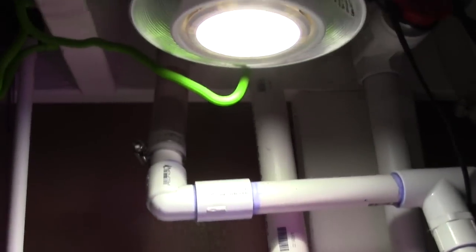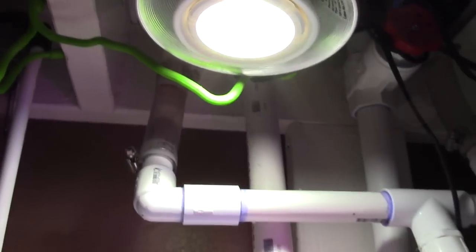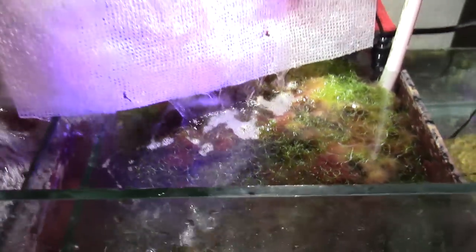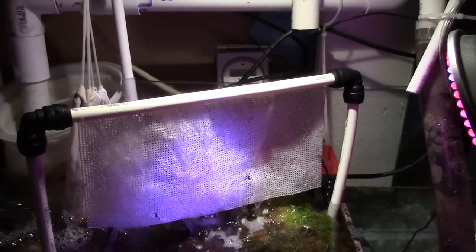I'm powering this with the PAR38 that I showed you and also the LED that I got from Home Depot mounted to the top. I'm actually gonna go ahead and make a second algae turf scrubber for my 34 gallon Solana.